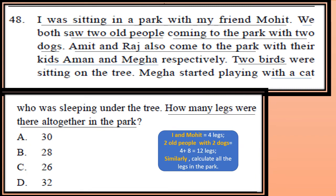Question 48: I was sitting in a park with my friend Mohit. We both saw two old people coming to the park with two dogs. Amit and Raj also came to the park with their kids Aman and Megha respectively. Two birds were sitting on the tree. Megha started playing with a cat who was sleeping under the tree. How many legs were there altogether in the park? See the hint: I and Mohit means 4 legs. Two old people with two dogs is 4 plus 8 = 12 legs. Now similarly calculate all the legs in the park.